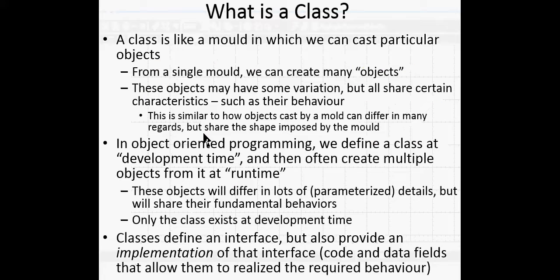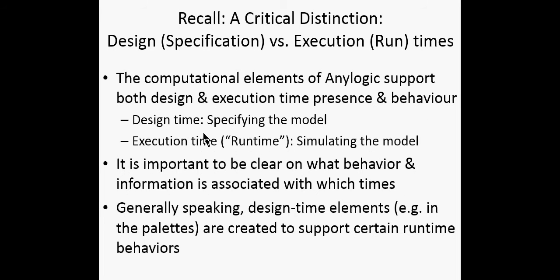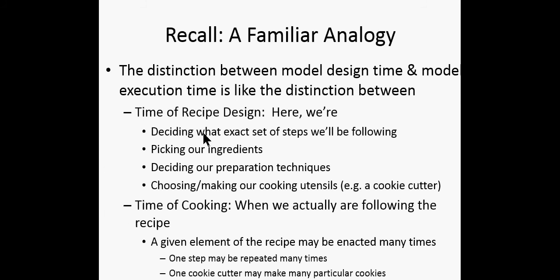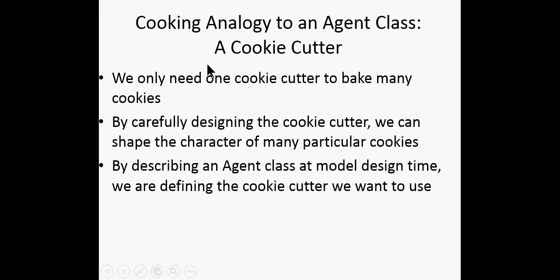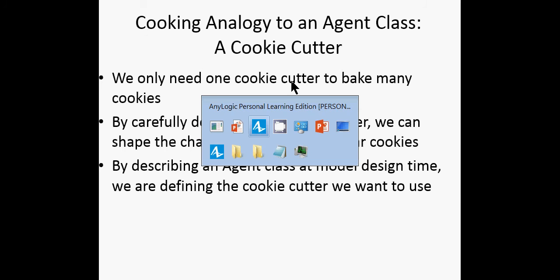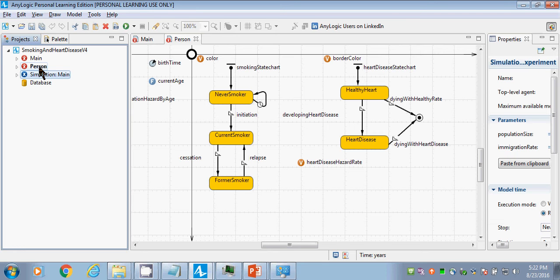One class can produce many particular instances — we can have person and produce ten people, a hundred, a thousand, ten thousand, and so on. Just like a cookie cutter, we can create many particular cookies. They all share certain features — they all look like Santa Claus — but they differ in their particulars, like how burnt they are.